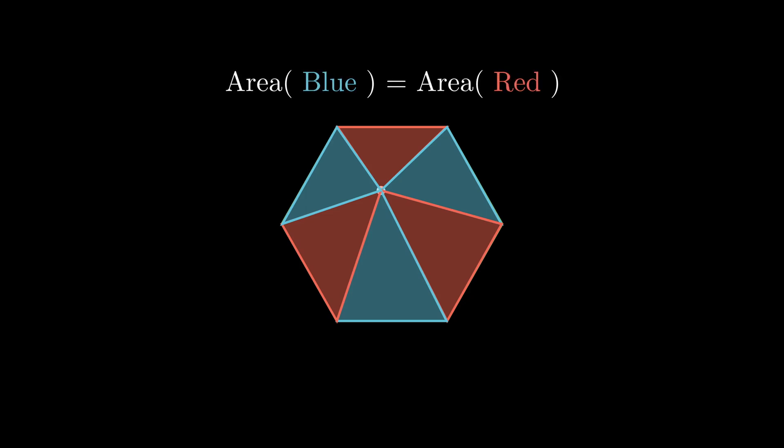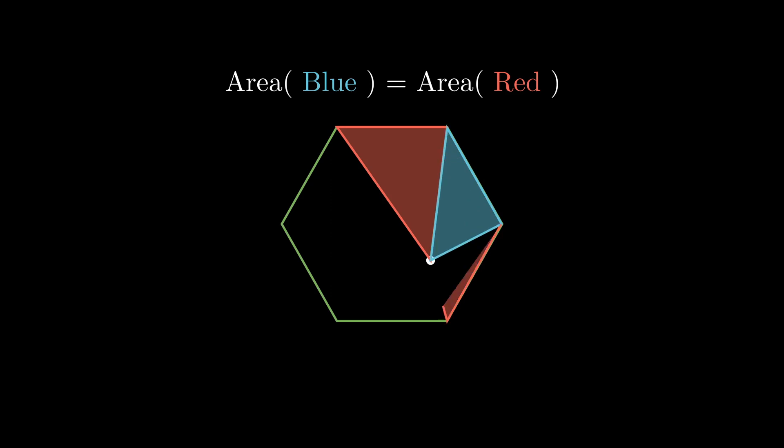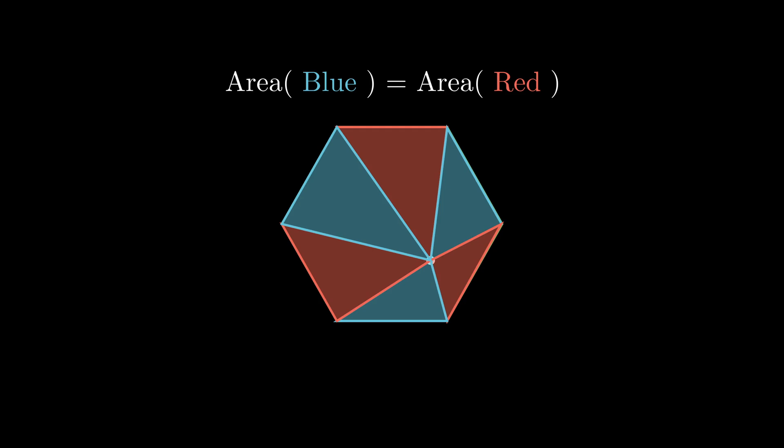It turns out that the combined area of all red triangles is equal to the total area of blue triangles. And remember, the internal point can be anywhere.